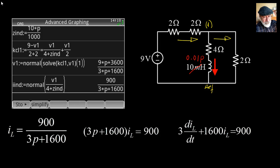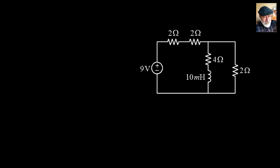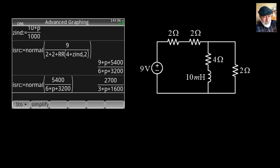Same circuit, but now let's find the differential equation whose solution is the current in the source. Copy the circuit over. The first step is the same: replace reactive elements by their p-impedances, Lp for the inductor. This time, compute the current as the voltage source divided by the impedance seen by that source: 9 divided by 2 in series with 2 in series with the parallel combination of 4 in series with Z_L, and 2.